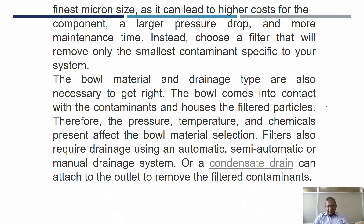Wherever we use a pneumatic system, it is always preferable to use an FRL unit. The bowl material and drainage type are also necessary to get dry air. The bowl comes into contact with contaminants and houses the filtered particles; therefore, the pressure, temperature, and chemicals present affect the bowl material selection. The filter also requires drainage using an automatic, semi-automatic, or manual drainage system, or a condensate drain can be attached to the outlet to remove the filtered contaminants.